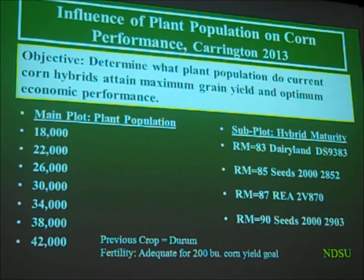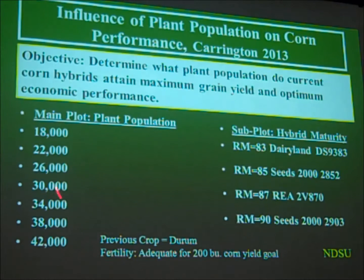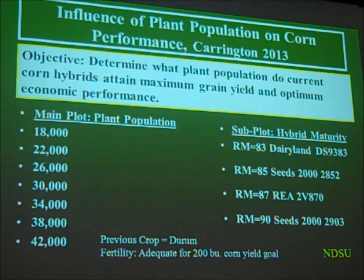In 2013, we did the trial again with the same objectives. The trial was modified slightly with a different group of hybrids — again an 83, 85, 87, and 90-day hybrid. These were selected because they were high-yielding or competitive hybrids within their maturity group, and we could obtain adequate seed for the study. This year our populations were adjusted slightly — we throttled back 2,000 plants per increment, giving us a nice range of 18,000 plants per acre up to 42,000 plants per acre.